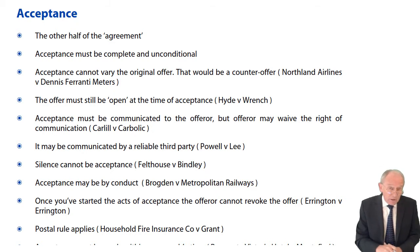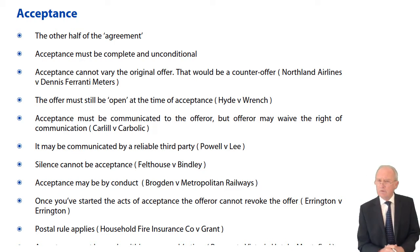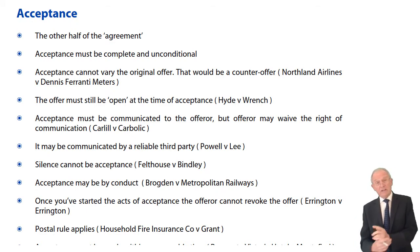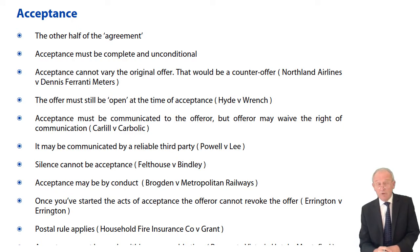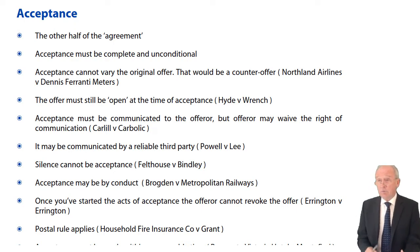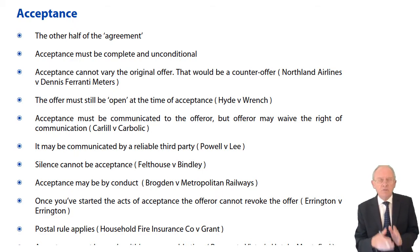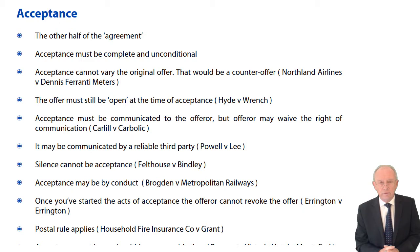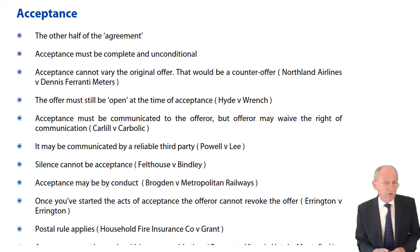Acceptance may also be communicated by a reliable third party. Revocation could be communicated through a reliable third party, as in Dickinson v Dodds. Now here we have acceptance being communicated by a reliable third party in Powell v Lee. In that case, it was claimed acceptance had been communicated by a reliable third party, but the court said no — that person was acting without authority and therefore was not a reliable third party. However, the court confirmed there's no reason why acceptance could not be communicated by a reliable third party.